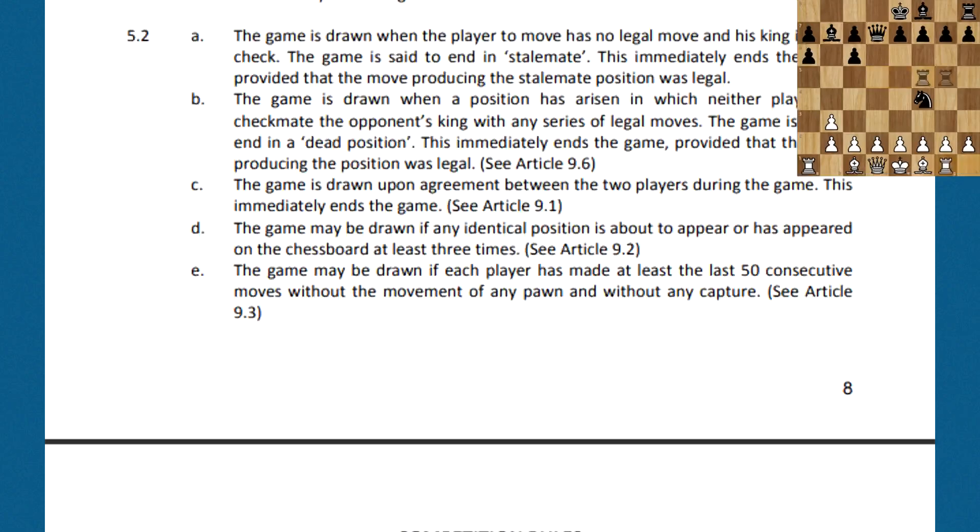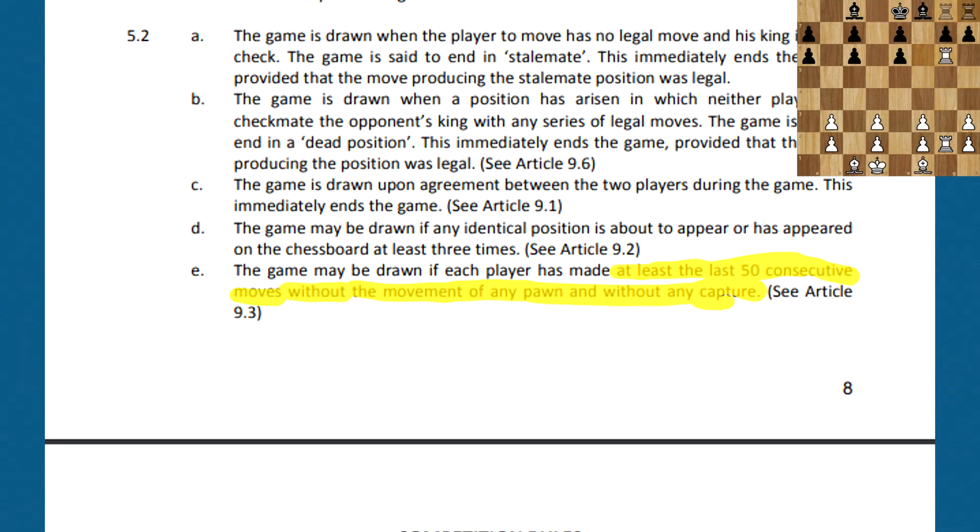First is the 50 move rule. This rule was believed to be first introduced in 1561 by the infamous Ruy Lopez in his book Libro de Ajedrez, which prevents the game from playing on indefinitely. In this rule, a pawn move or a capture must be made within 50 moves, otherwise one side can claim a draw, and if a draw can be claimed for this answer, it will be, so we must prevent this for as long as possible.